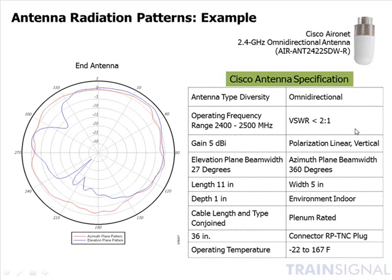The VSWR — voltage standing wave ratio — is when the waveform, your signal, goes from the cable to the antenna, and part of that waveform tends to be reflected back down towards the source. You want to be really careful that you match your connectors and antennas correctly, because if you don't, what you get is an impedance mismatch, and that causes more of that waveform to reflect back, which can be destructive. Here you can see the antenna gain, which is in comparison with an isotropic antenna, so it's reflected in dBi.